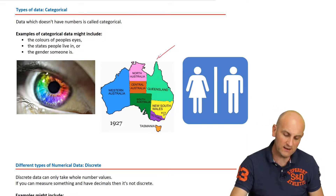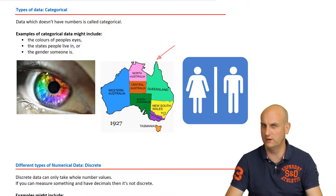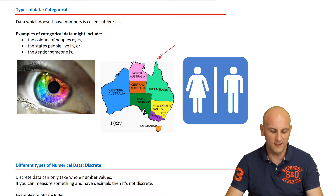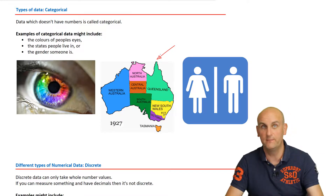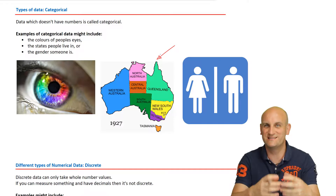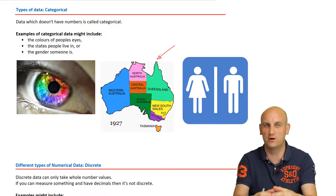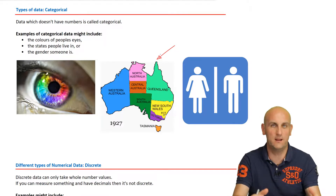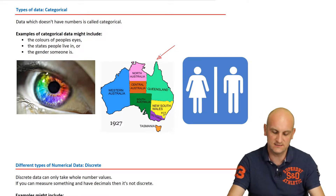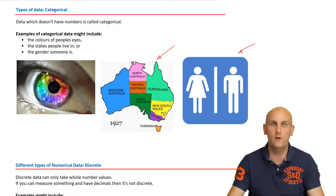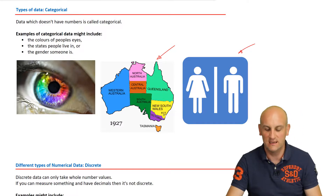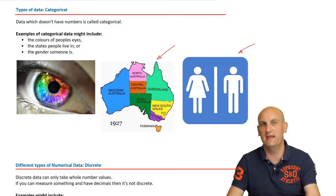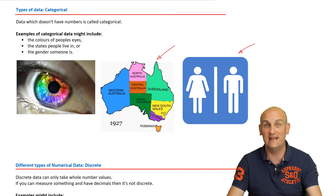I live here in Australia, recording for the world, in a state called Victoria. So Victoria — my state — is categorical. It's not a number; it is a state. And what about this one here? It is male or female. Gender, again, is categorical.